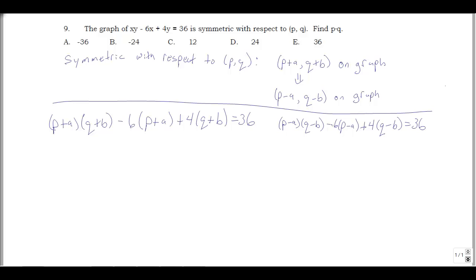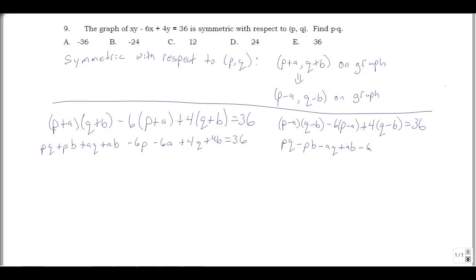Now let's multiply these out. Expanding the first equation gives: pq plus pb plus aq plus ab minus 6p minus 6a plus 4q plus 4b equals 36. The second equation gives: pq minus pb minus aq plus ab minus 6p plus 6a plus 4q minus 4b equals 36.